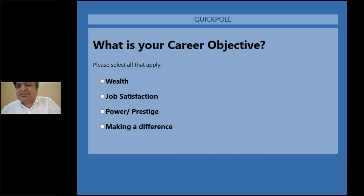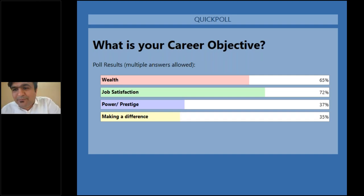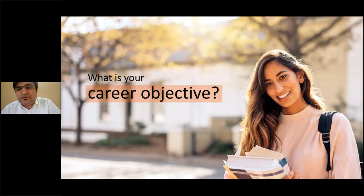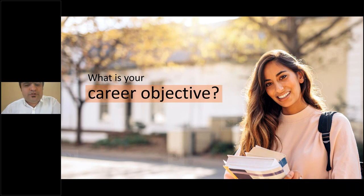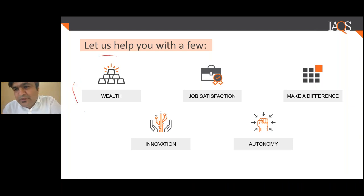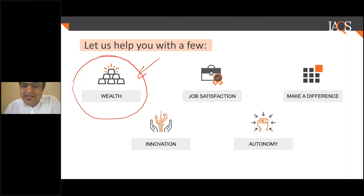Everyone here has put up majorly wealth and job satisfaction. Power, prestige, and making a difference come in a little later. Whenever I decide a career, I need to focus on five aspects. The first aspect is wealth — obviously money is the most important thing, so whatever career I choose needs to be giving me money.